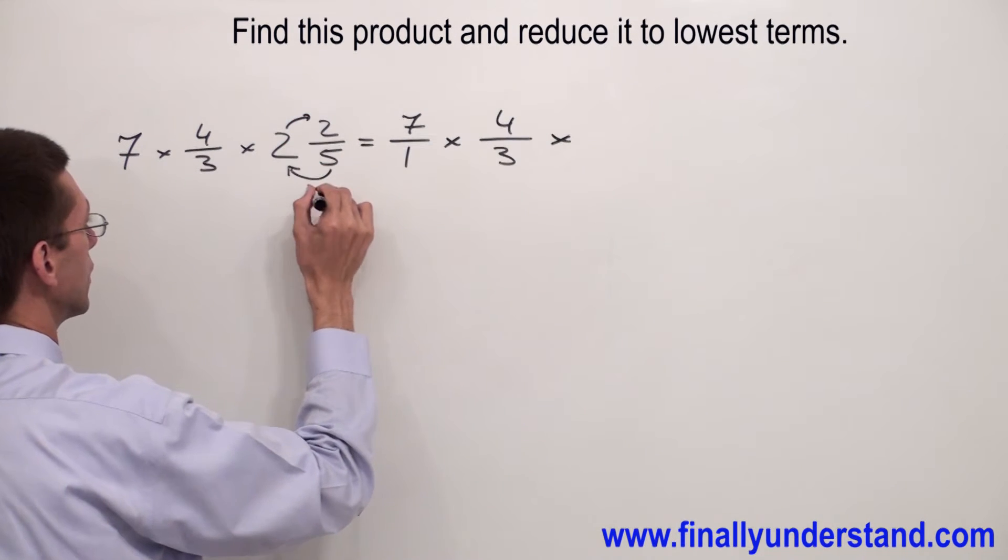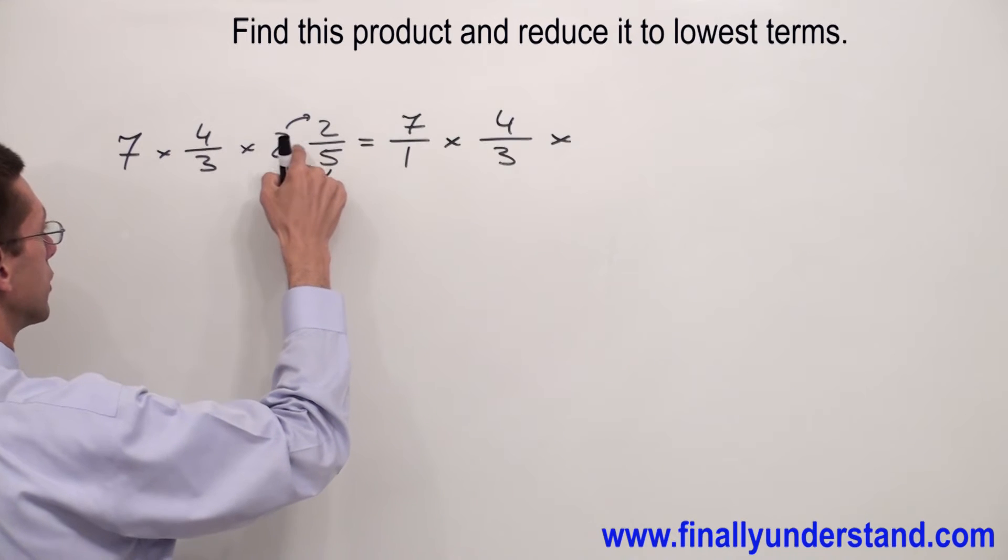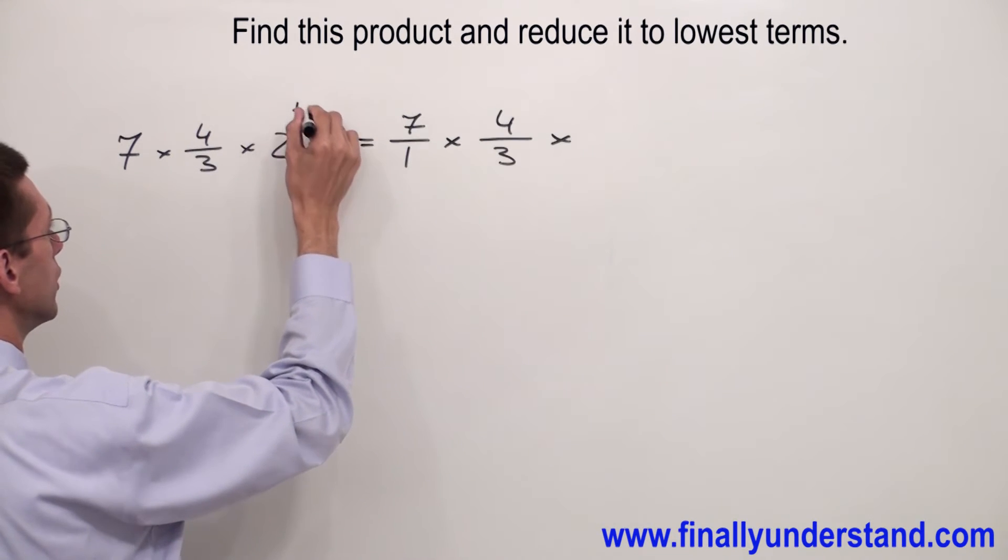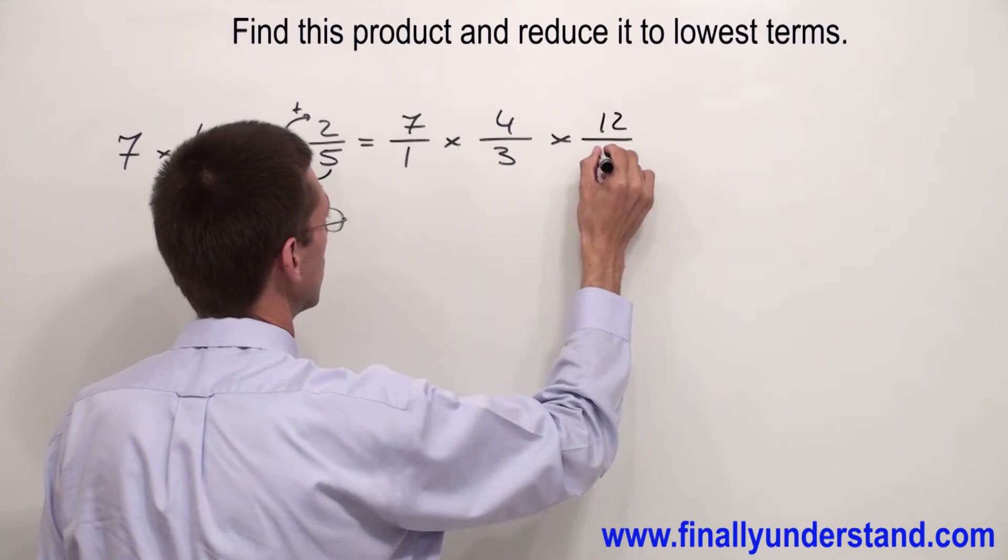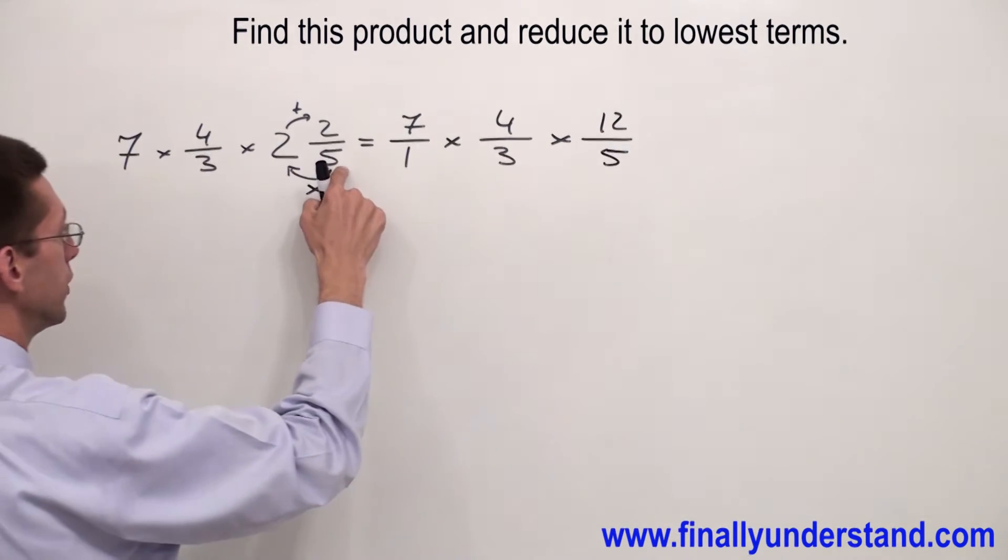To improper fraction: 5 times 2 is 10, 10 plus 2 equals 12 over 5. Remember, denominator always stays the same.